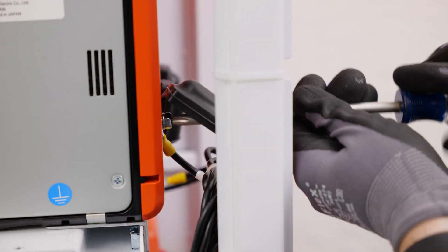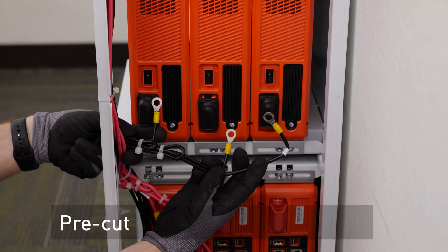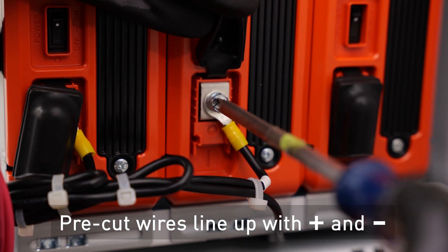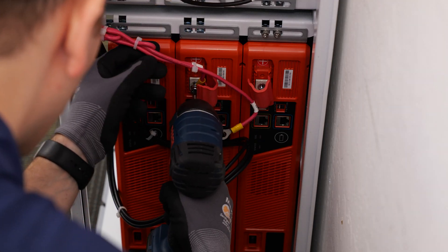Connect the conductors to the battery terminals. Note that the pre-cut wire should line up with each of the batteries positive and negative terminals. Connect the wires until all batteries are connected.